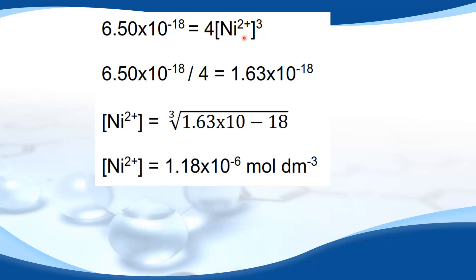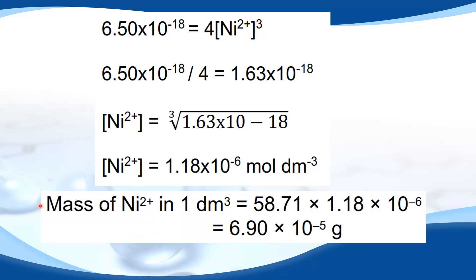To solve for the concentration of nickel ions, we divide the solubility product by 4: 6.50 × 10⁻¹⁸ ÷ 4 = 1.63 × 10⁻¹⁸. Taking the cube root gives 1.18 × 10⁻⁶ mol dm⁻³. The question asks for the mass of nickel ions in 1 dm³ of water. We multiply the concentration, 1.18 × 10⁻⁶ mol dm⁻³, by the molar mass of nickel, 58.71 g mol⁻¹, giving 6.90 × 10⁻⁵ grams of nickel in 1 dm³ of water.